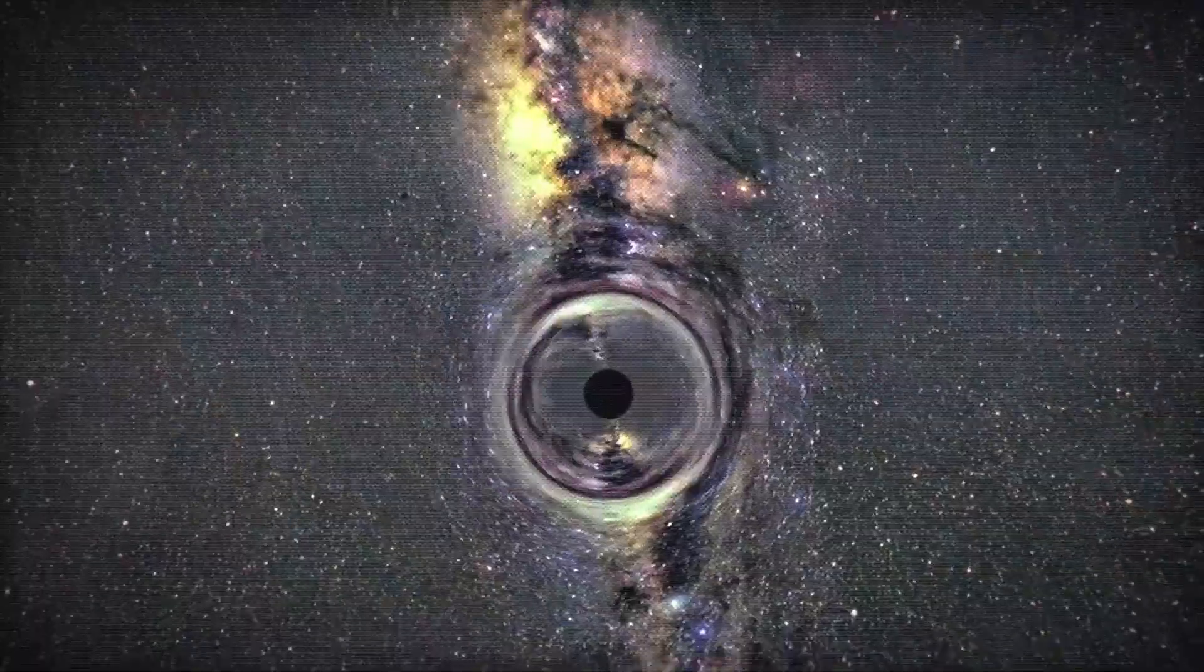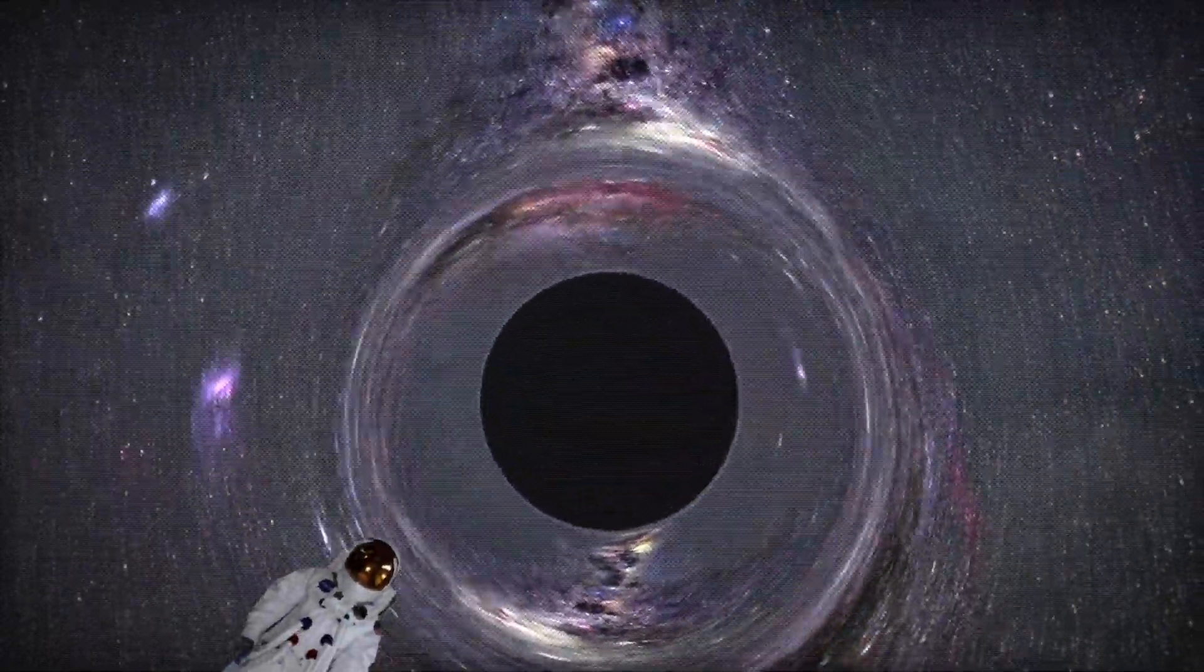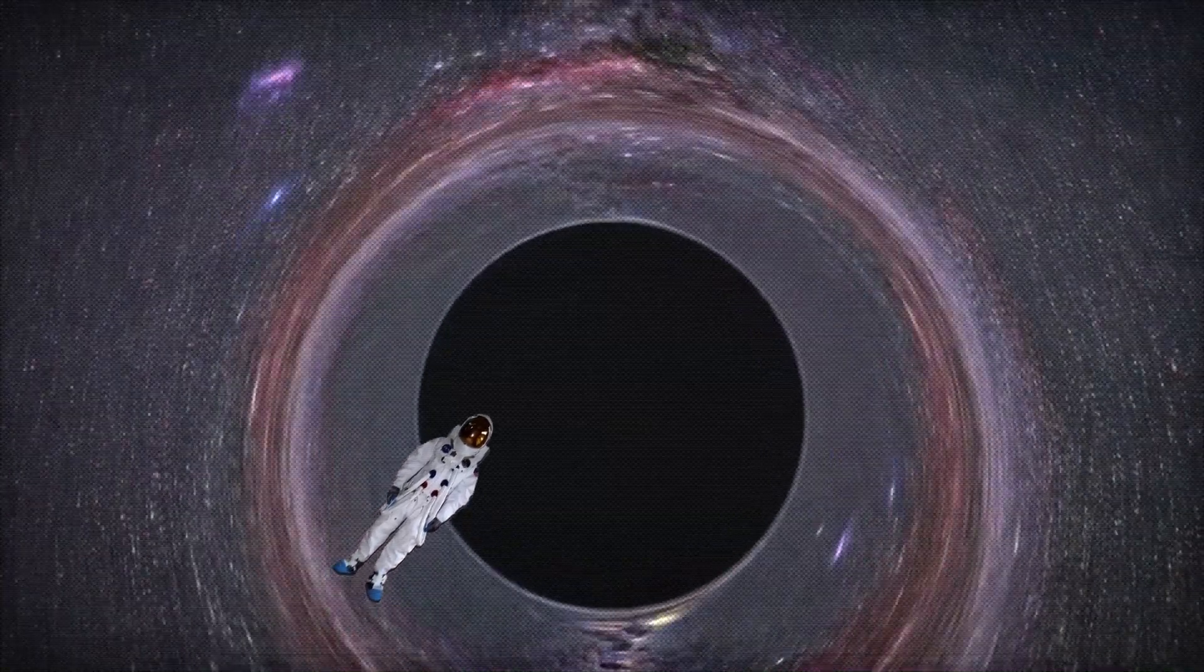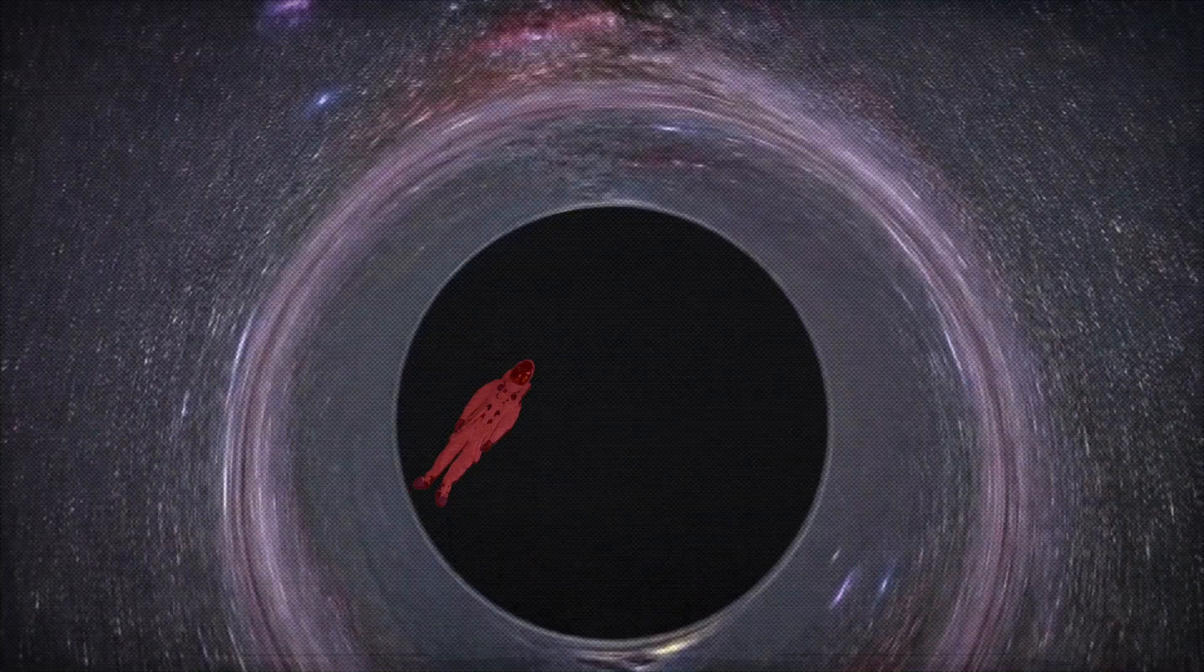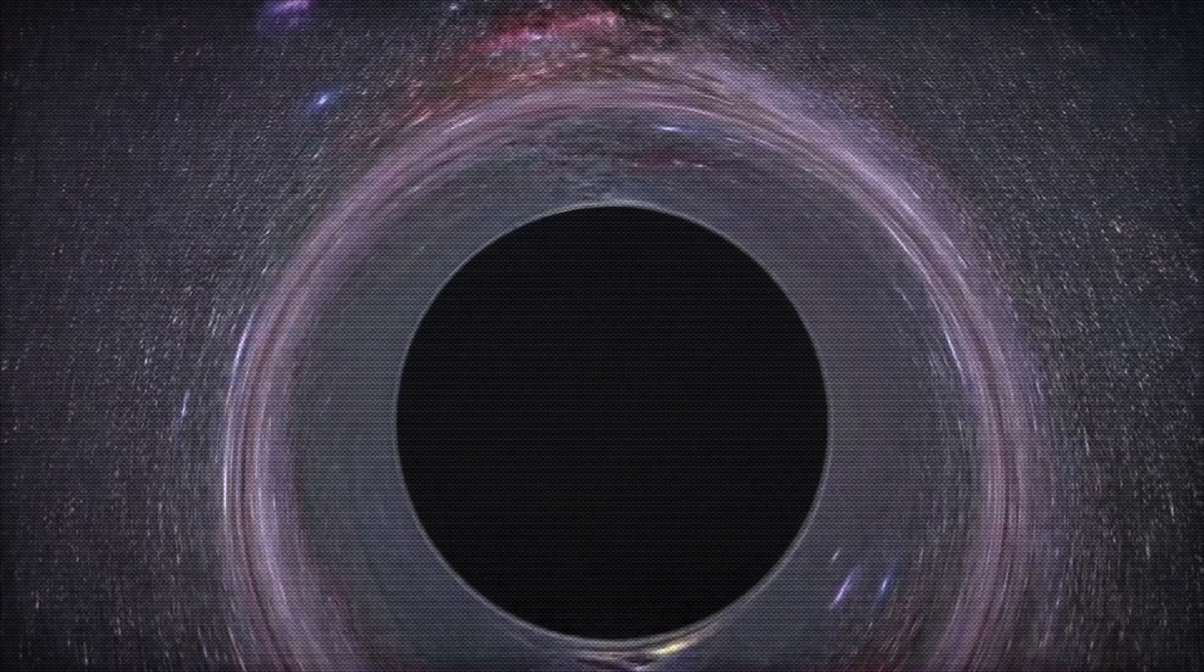This is short-lived, however, as the event horizon begins to surround you, until only a tiny point of light behind gets blue-shifted through the ultraviolet spectrum and becomes invisible. At this point, your eyes will see no more.